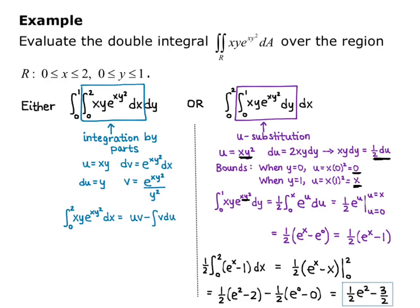Notice I did not finish the integration by parts on the other order — that would have been far more work, requiring a second antiderivative just for the inner integral and then still taking the outer integral. So when setting up double integrals, always check whether one order of integration is easier than the other.